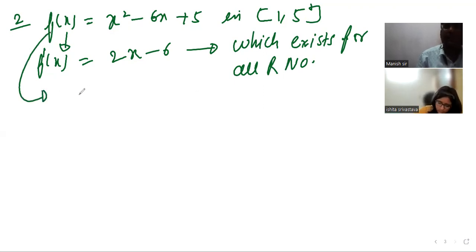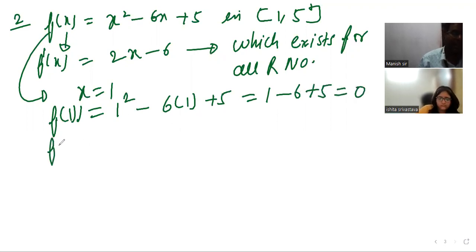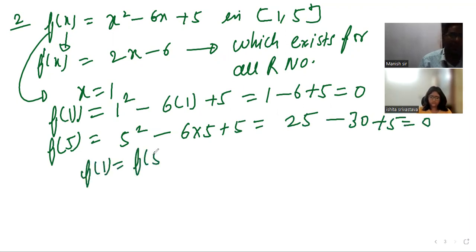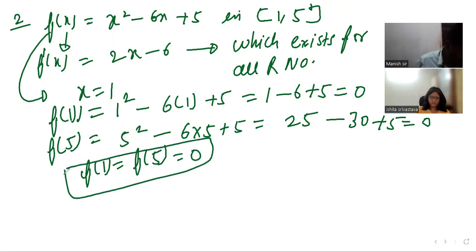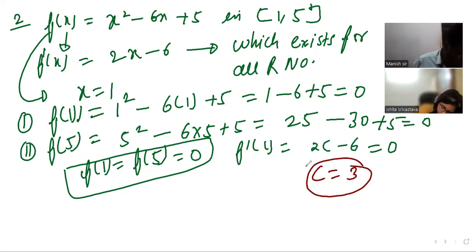Now put x = 1 in the function: f(1) = 1² - 6(1) + 5 = 1 - 6 + 5 = 0. Similarly, put x = 5: f(5) = 5² - 6(5) + 5 = 25 - 30 + 5 = 0. So f(1) = f(5) = 0, meaning all three conditions of Rolle's theorem are satisfied. Setting f'(c) = 2c - 6 = 0 gives c = 3, which satisfies Rolle's theorem.